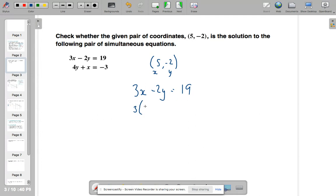So 3 times 5 minus 2 times negative 2. 3 fives are 15. That's times negative 2. Negative 2 times negative 2 is positive 4. And there we go. That equals 19. So x and y fit in that first equation.